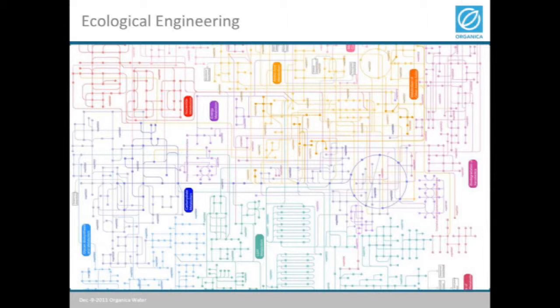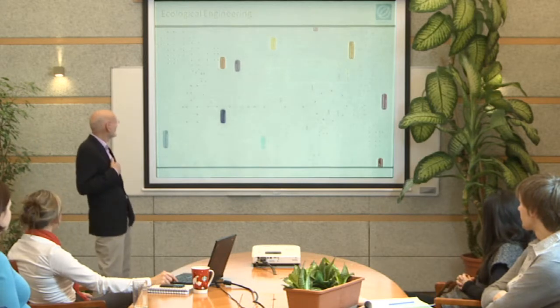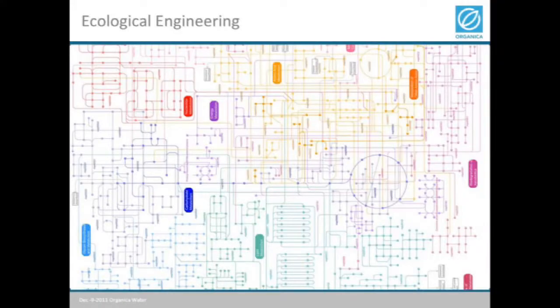This is a fairly complicated drawing — when I first saw this, I thought it was a drawing of a microchip. In fact, it's a detail of a drawing that depicts the metabolic processes of a single cell. The reason I'm showing this is because if you want to understand in an analytical way the workings of a single cell, this is how incredibly complicated it gets.